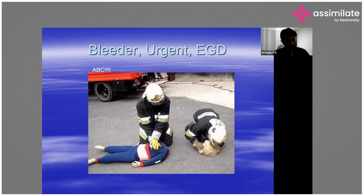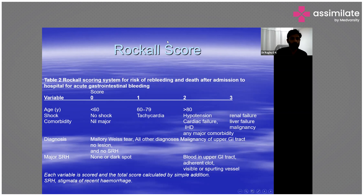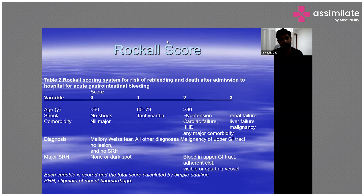We use the ROCAL scoring system to determine the risk of re-bleeding and death after admission in cases of acute gastrointestinal bleeding. Parameters include patient age, whether the patient is in shock, comorbidities such as cardiac failure, ischemic heart disease, renal failure, liver failure, or malignancy. Signs of recent hemorrhage on endoscopy — such as an adherent clot or a visible or spurting vessel — also add to the ROCAL score.